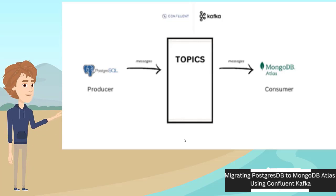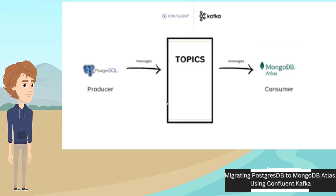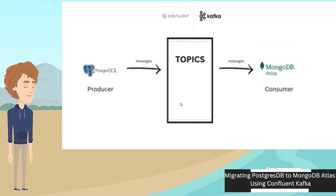The data pulled in from the producers is written in Kafka into something called topics. In our use case, Postgres SQL is the producer which will produce data into the Kafka topics, and MongoDB Atlas is the consumer which will receive the data. We are going to use Confluent Kafka, which is the cloud version of Kafka, for our use case. So let's get started.